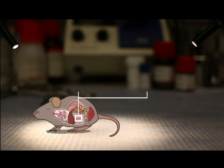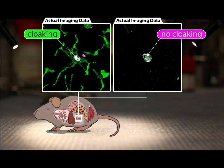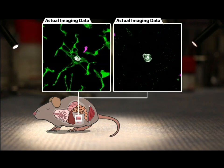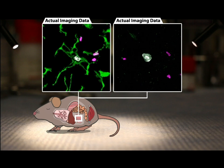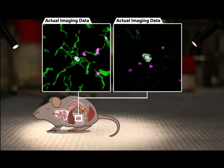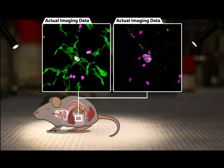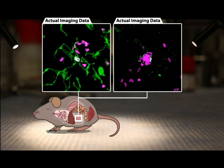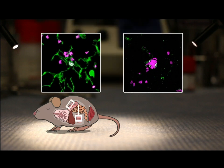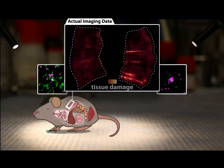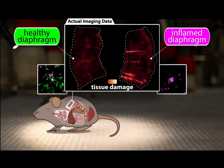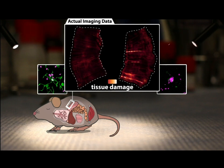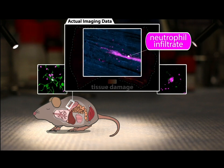By sequestering pro-inflammatory foci through cloaking, resident tissue macrophages were able to interfere with the initiation of neutrophil activation and subsequent swarming, thereby disrupting potential tissue-damaging inflammatory responses at the earliest possible stage. When we used drug treatments that depleted the resident macrophages, active tissues such as the diaphragm now showed evidence of tissue destruction by neutrophils that was not seen in normal animals with intact macrophage populations.